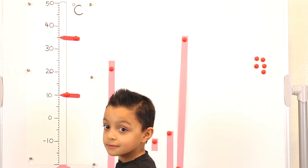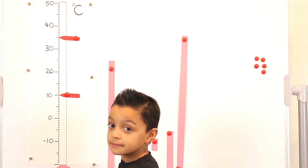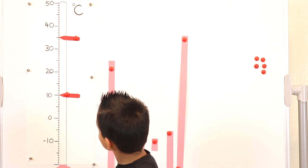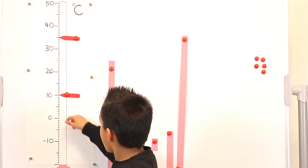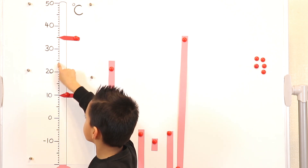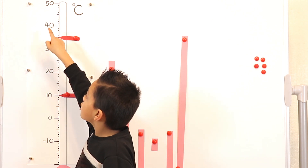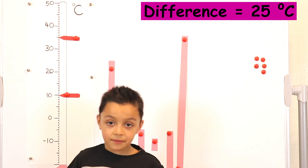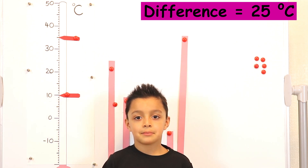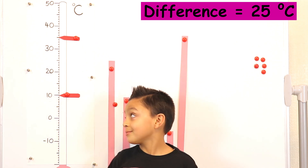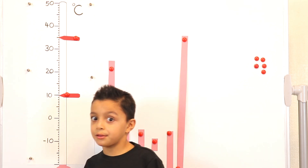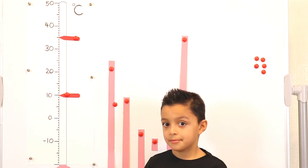What's the difference between ten degrees Celsius and thirty-five degrees Celsius? Five, ten, fifteen, twenty, twenty-five. Twenty-five. Very good. Which temperature is cooler? Definitely ten degrees Celsius.